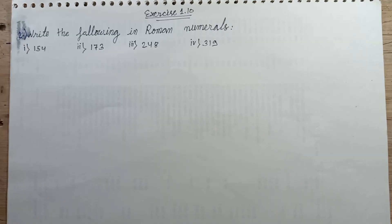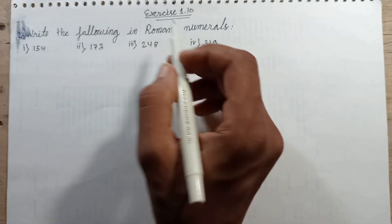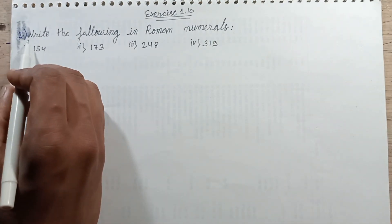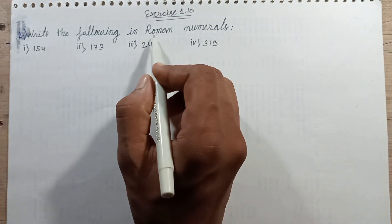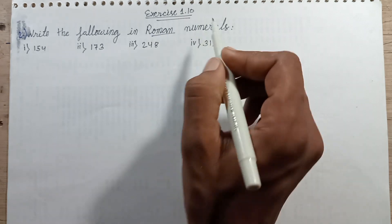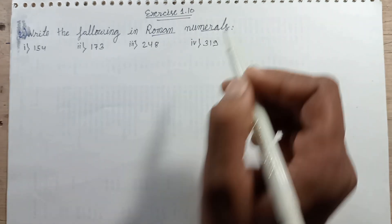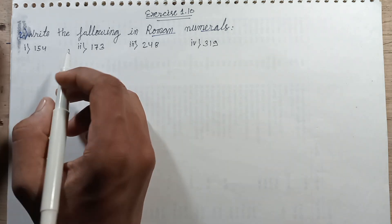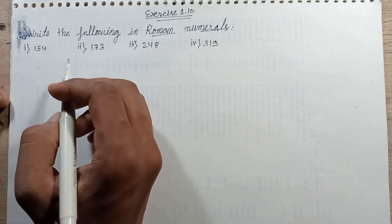Welcome back to this episode. This episode discusses exercise 1.10, question number 2: write the following in Roman numeral form. These 4 numbers, write in Roman numeral form.